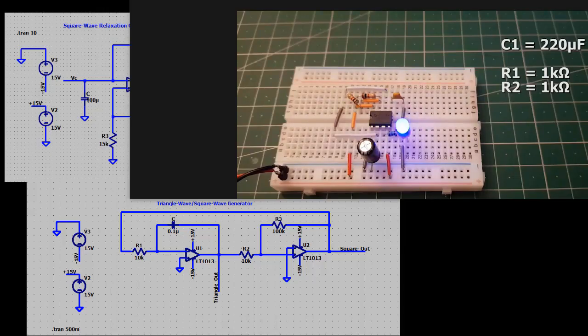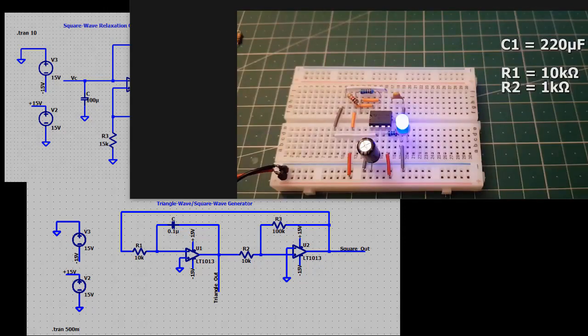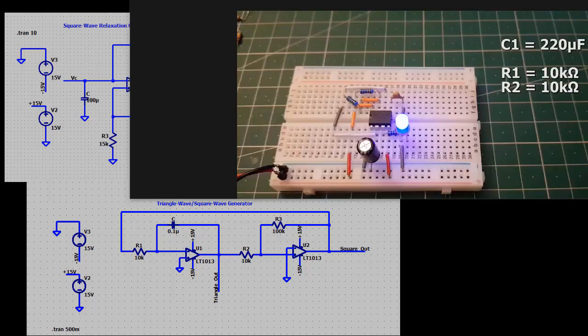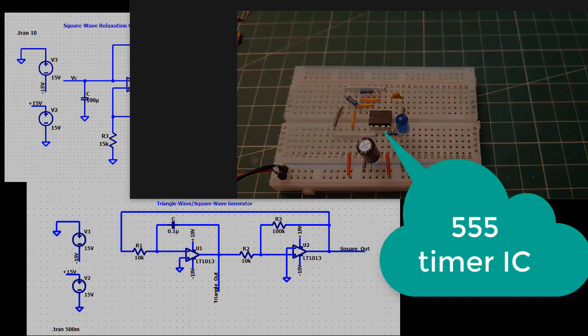All the relaxation oscillators shown in this video are relatively simple to construct. Now, there is even an easier way to generate basic waveforms. The easy way is to use an IC especially designed for the task. Popular square wave generating chip that can be programmed with resistors and a capacitor is the 555 timer IC. And this is what we will look at in the next video.